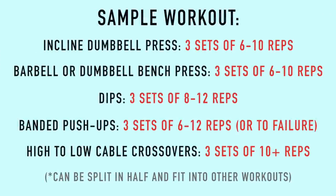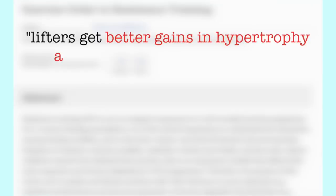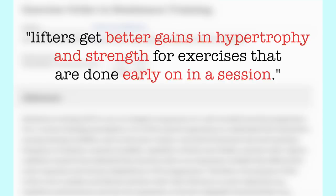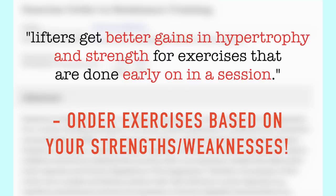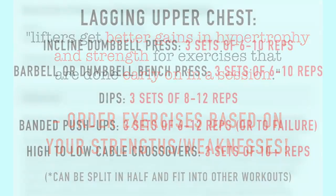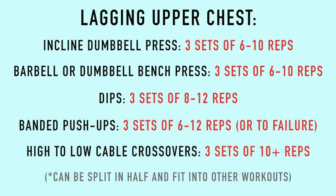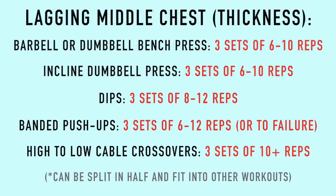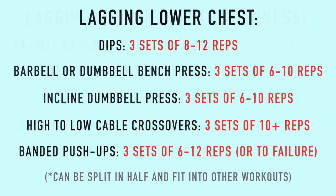To conclude, here is a sample chest workout using the exercises previously discussed, but one important thing to keep in mind is exercise order. Several studies have shown a trend where lifters get better gains in hypertrophy and strength for exercises done early in a session, meaning you want to order exercises based on your strengths and weaknesses. If your upper chest is lagging, perform the workout in that order. If your mid chest and overall thickness is lagging, perform it in that order. And if your lower chest is lagging, perform it accordingly. This will help prioritize weaknesses and help balance out your chest.